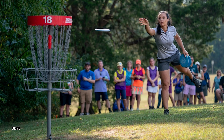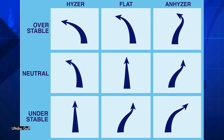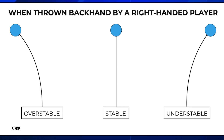Discs can also have unique flight paths. Flight paths have to do with stability and release angle. It can go hyzer, flat, or anhyzer, but also overstable, neutral, or understable. Stable discs usually fly straight when released flat. Understable means the disc will turn over to the right when released, and overstable goes towards the left. The unpredictability of disc flight is hard enough, but having to factor in wind is a whole different story.